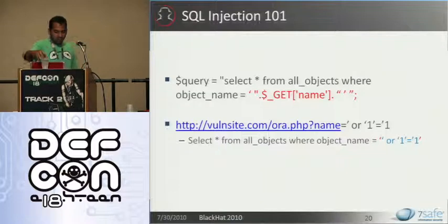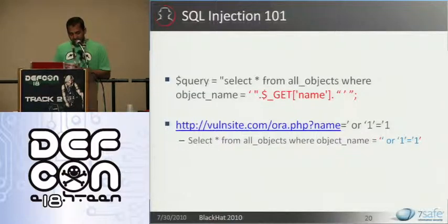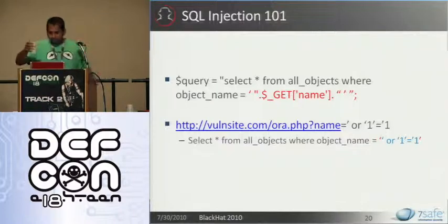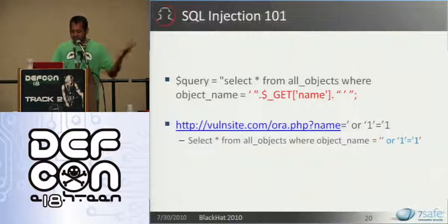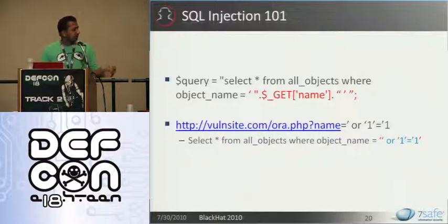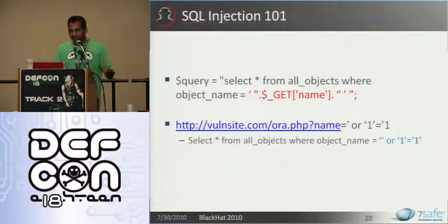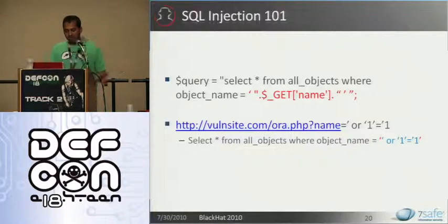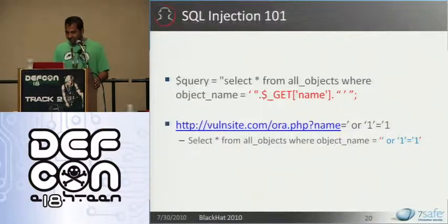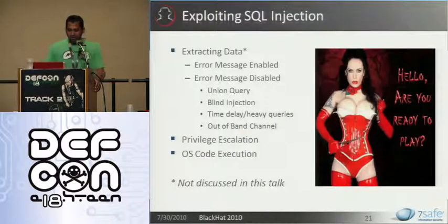Now we move on to the main agenda for today: SQL injection. SQL injection 101 — essentially that doesn't need any introduction. Unsanitized user input is used in SQL calls. For example, if you inject 'or 1 equals 1', this will alter the logic of the SQL query and return all rows. You can use SQL injection to compromise confidentiality, integrity, availability, and so on.